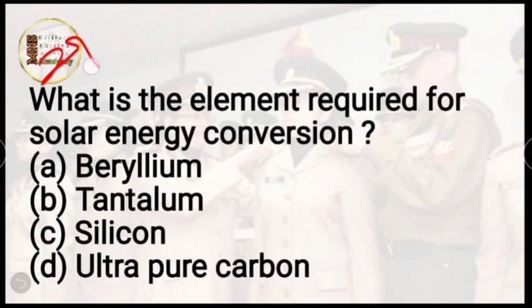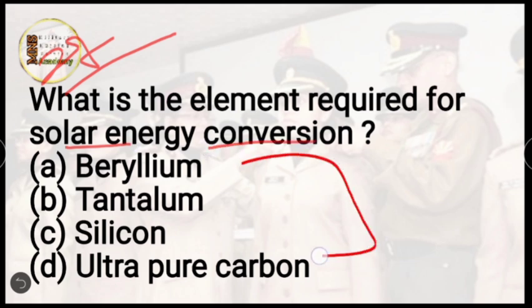Question number 27: what is the element required for solar energy conversion? Options are beryllium, tantalum, silicon, or ultra-pure carbon. The correct answer is option C, silicon. Silicon solar cells are required to convert solar energy into electrical energy.